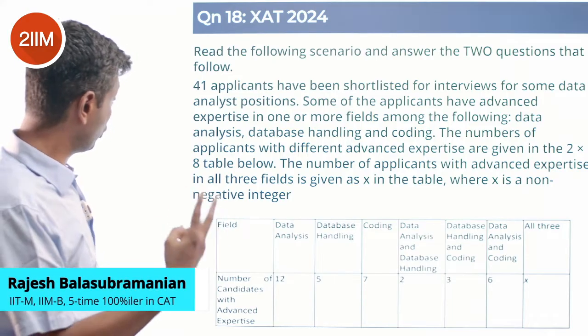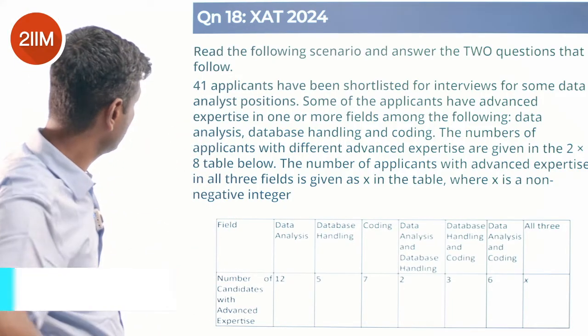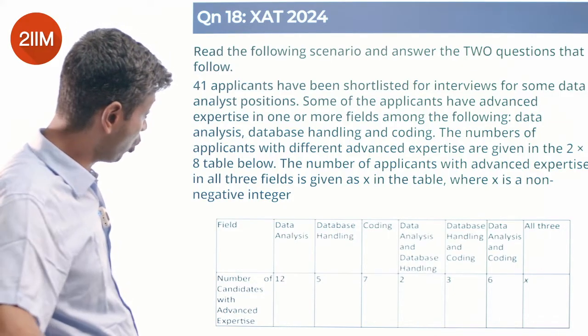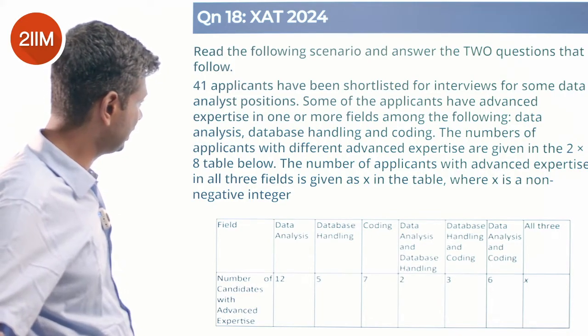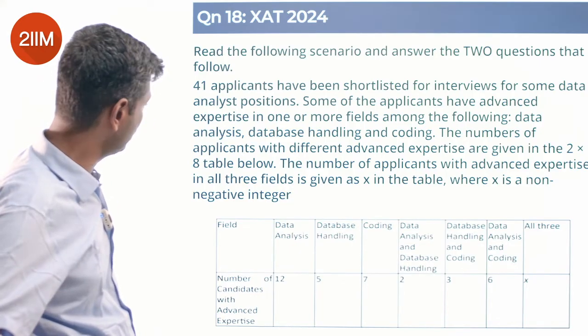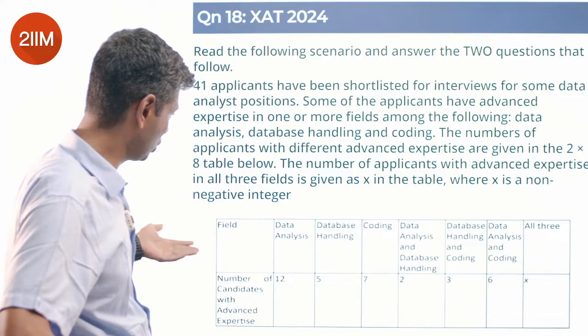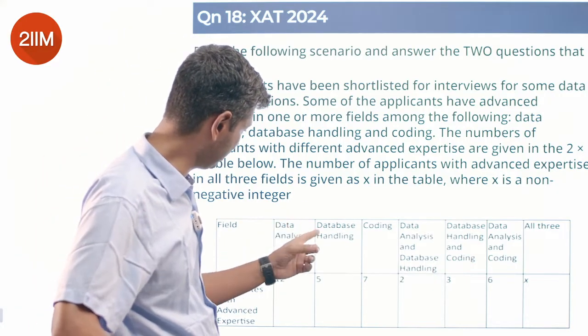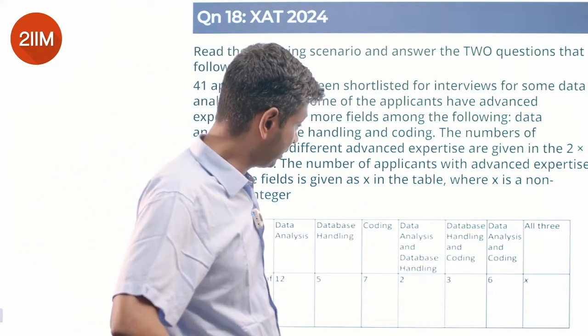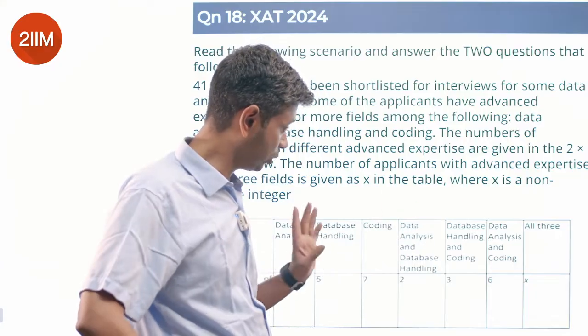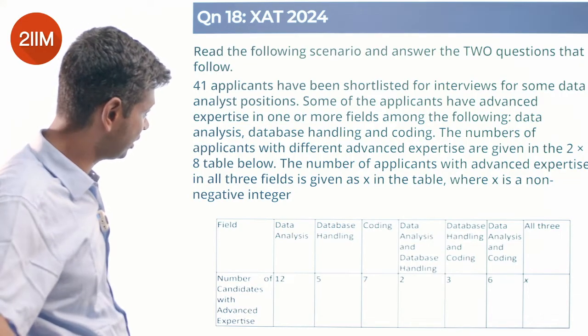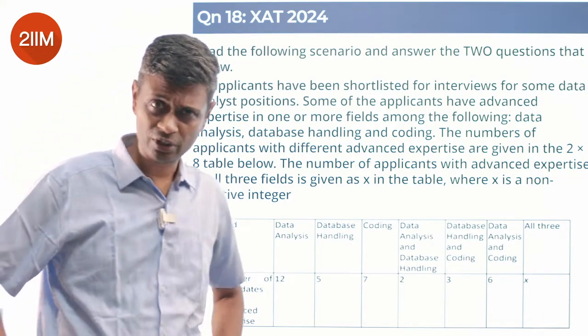Read the following scenario and answer the two questions that follow. 41 applicants have been shortlisted for interviews for some data analyst positions. Some of the applicants have advanced expertise in one or more fields among the following: data analysis, database handling, and coding. The numbers of applicants with different advanced expertise are given in the two by eight table given below. The number of applicants with advanced expertise in all three fields is given as X in the table, where X is a non-negative integer.